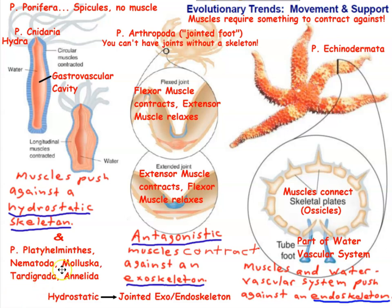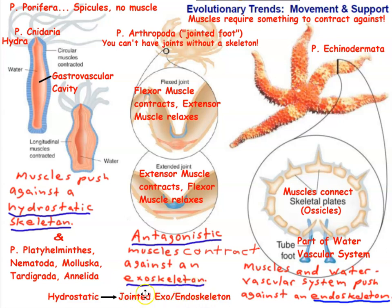All other phyla without an endoskeleton or exoskeleton — Cnidaria, Ctenophora, Platyhelminthes, Nematoda, Mollusca, Tardigrada, and Annelida — have hydrostatic skeletons with fluid-filled body cavities under pressure that support the body. The overall evolutionary trend in the musculoskeletal system is from hydrostatic skeletons to exoskeletons and endoskeletons with joints, with muscles attached to those skeletons contracting to produce movement.